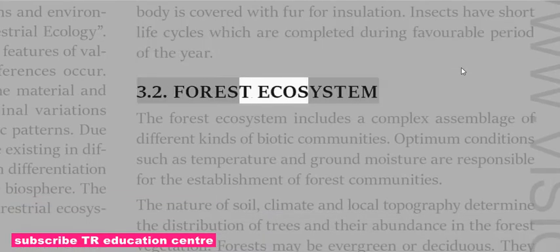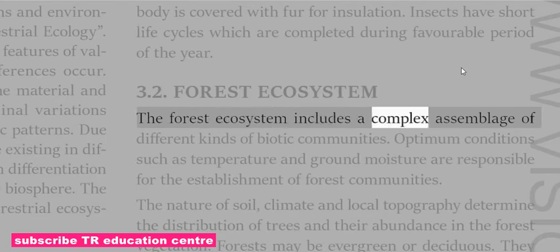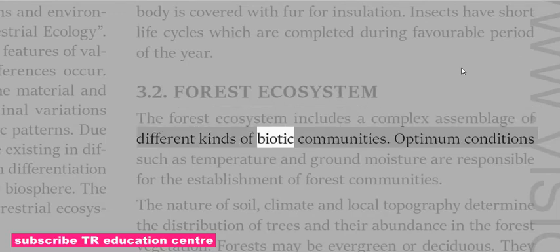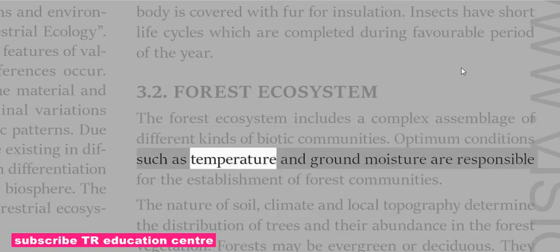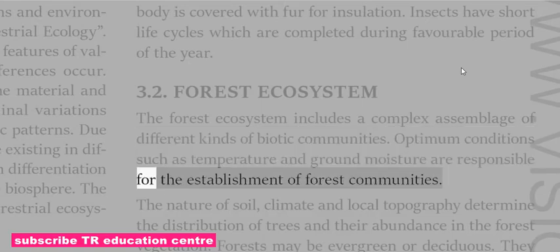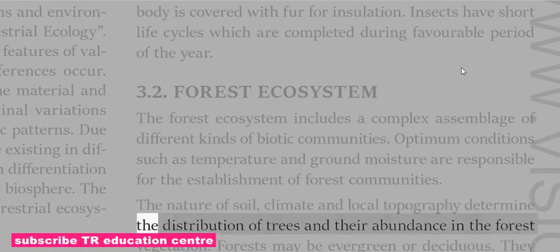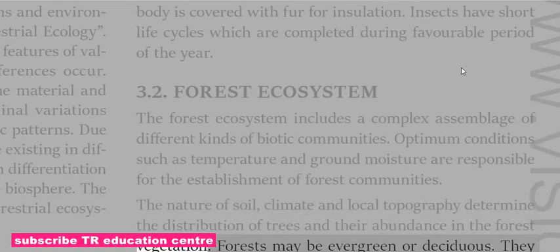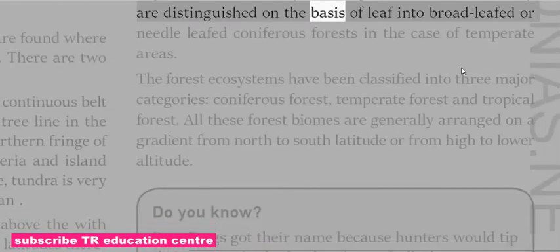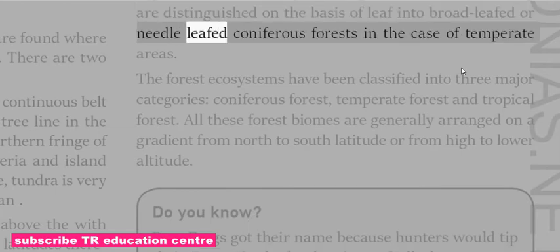The forest ecosystem includes a complex assemblage of different kinds of biotic communities. Optimum conditions such as temperature and ground moisture are responsible for the establishment of forest communities. The nature of soil, climate and local topography determine the distribution of trees and their abundance. Forests may be evergreen or deciduous, distinguished on the basis of leaf into broadleaf or needleleaf coniferous forests in temperate areas.